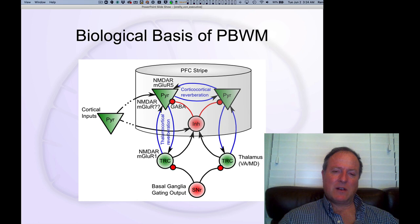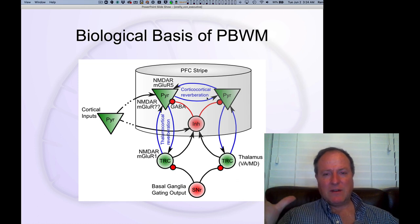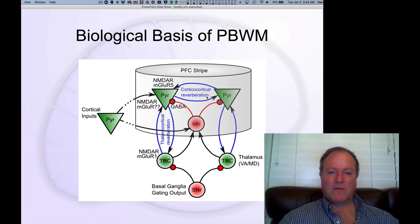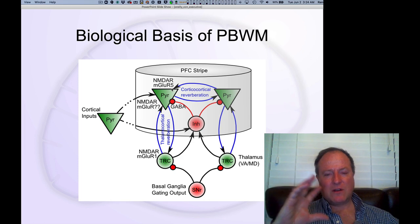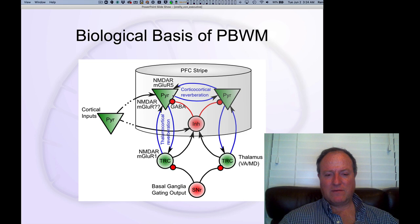And so there's actually specialized versions of the NMDA channels in prefrontal cortex that seem particularly important for sustaining these loops in even in the face of kind of interfering other information. And there's also metabotropic glutamate receptors that also have a long lasting effect that also are important for this kind of active maintenance function.